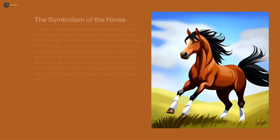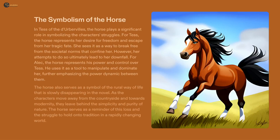Tess of the D'Urbervilles features a strong and meaningful horse symbol which reflects the characters' battle with societal norms that confine them. Tess regards the horse as a way to escape her destiny, while Alec uses it to control and govern her. The horse also serves as a cue of the rustic life which is vanishing in the novel, standing for the struggle to maintain traditions in the face of modernization and change.